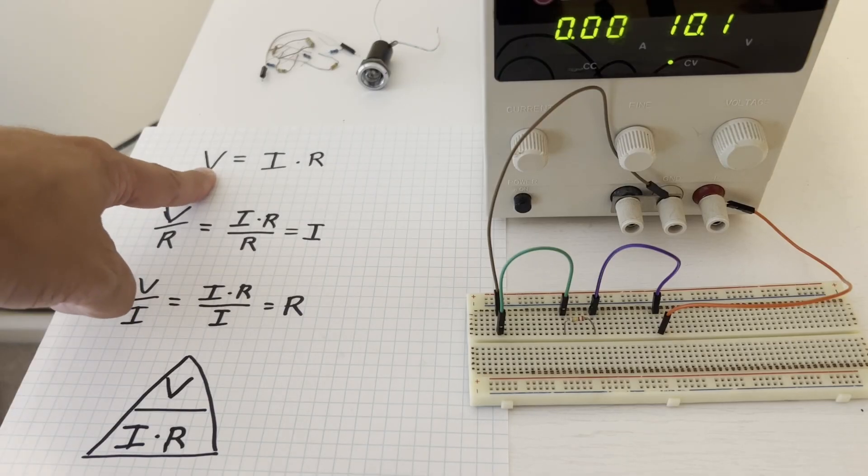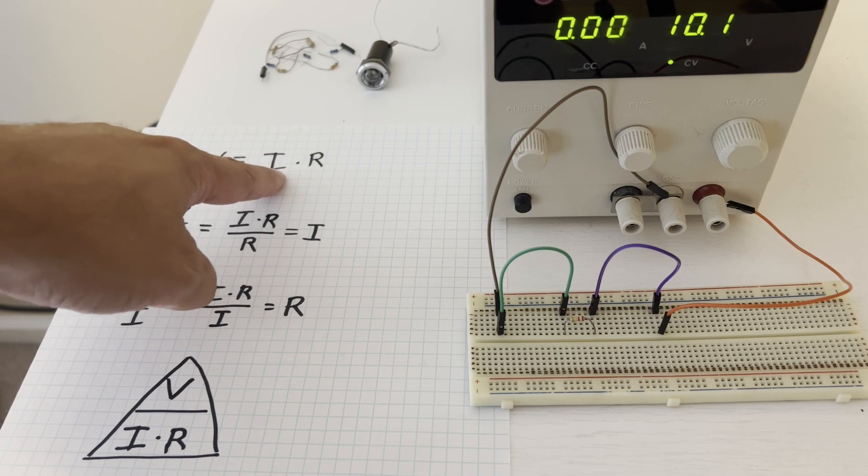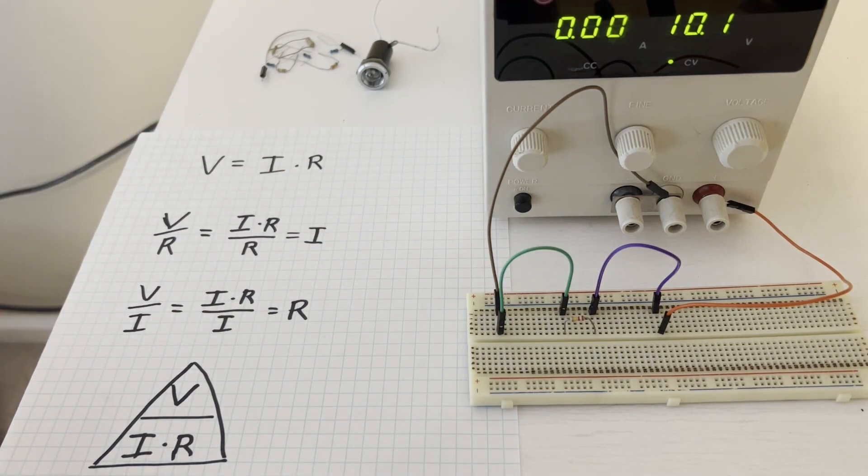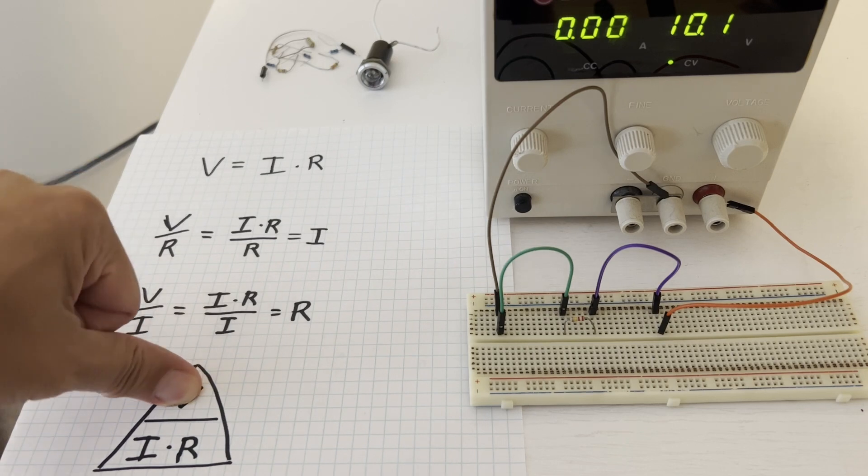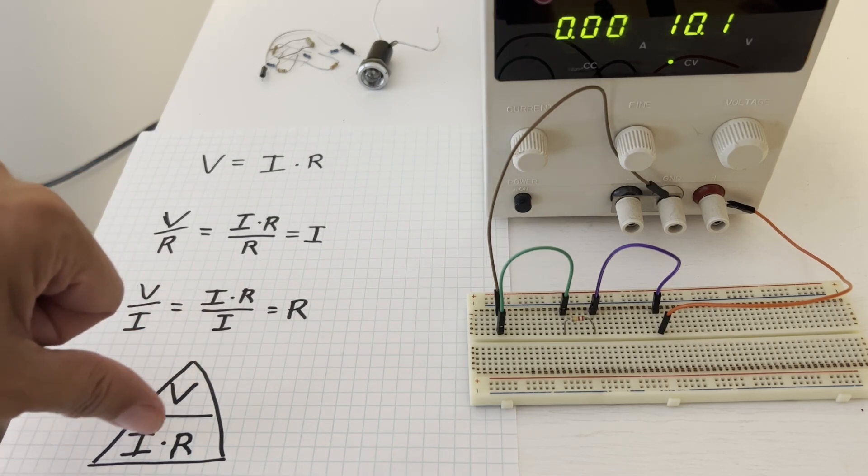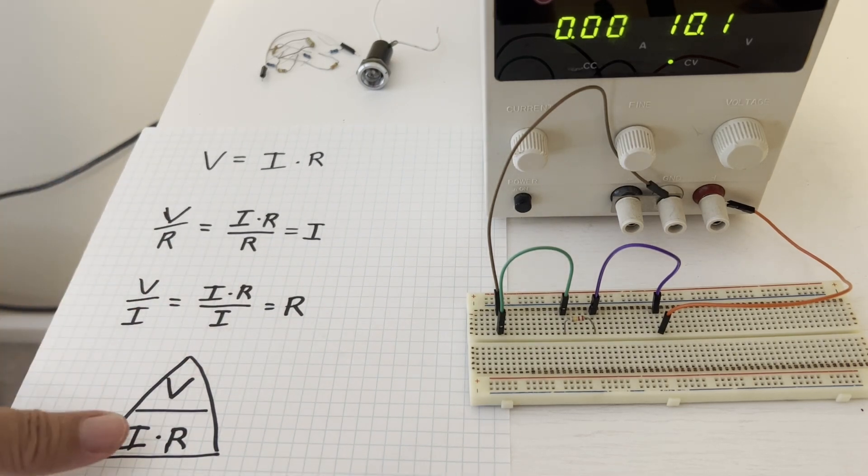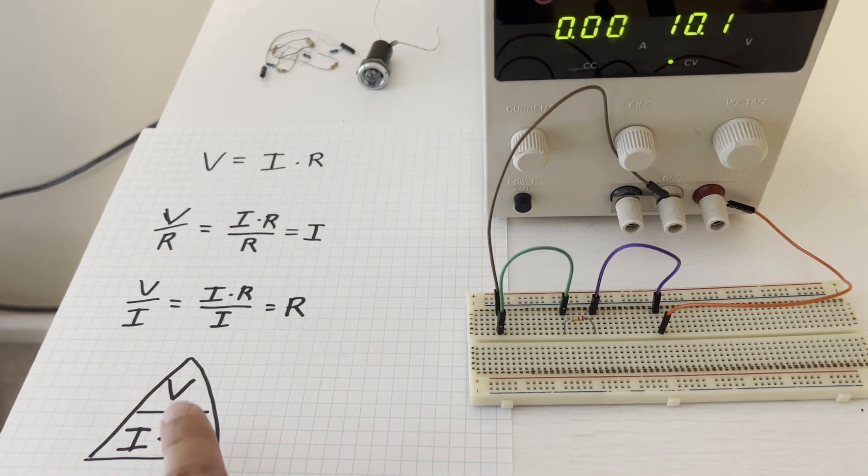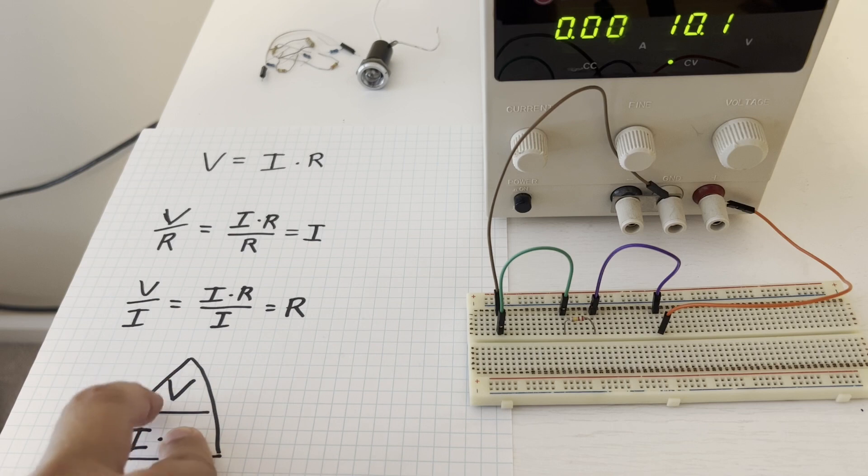So Ohm's law is volts equals current times resistance. And a handy trick is to draw V over IR. And so if we look at V, it's I times R. If you look at I, it's V divided by R. And if you look at R, it's V divided by I.